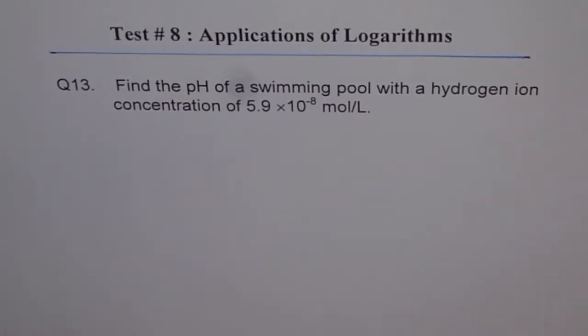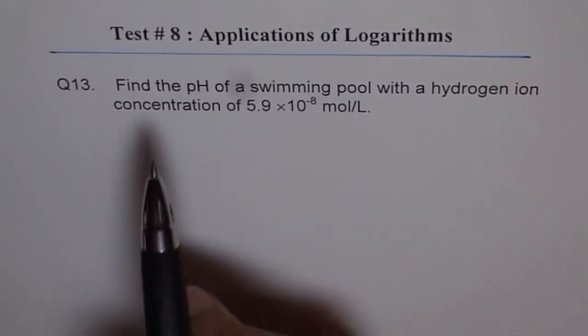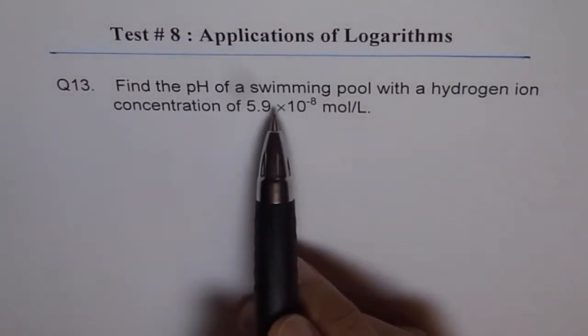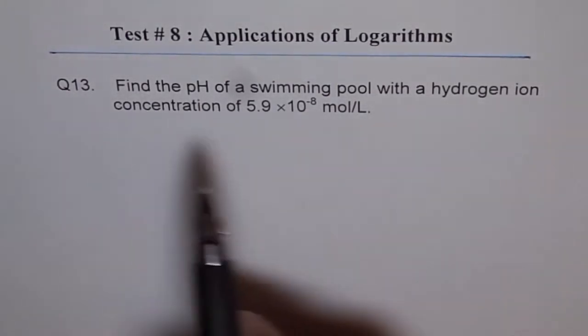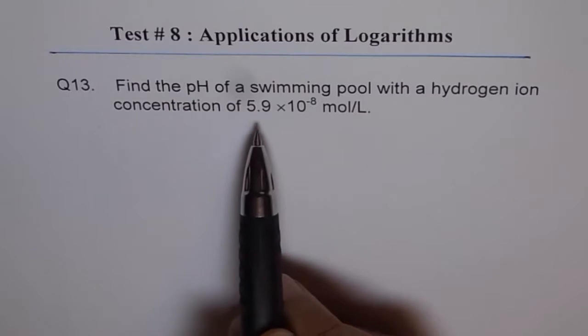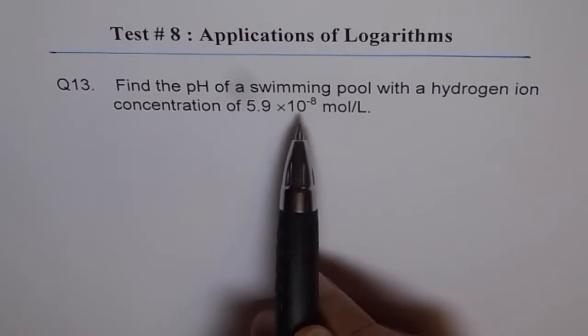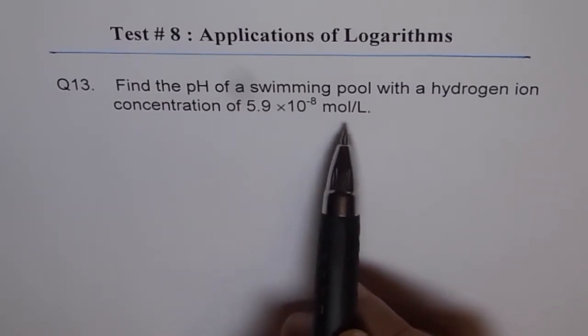Applications of logarithms. Question 13. Find the pH of a swimming pool with hydrogen ion concentration of 5.9 times 10 to the power of minus 8 moles per liter.